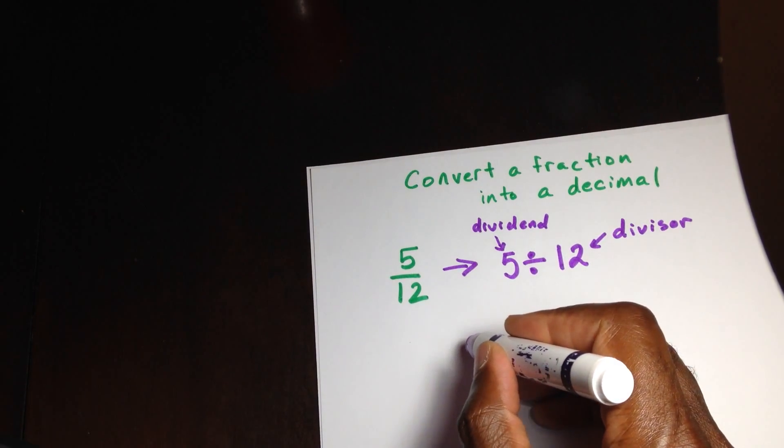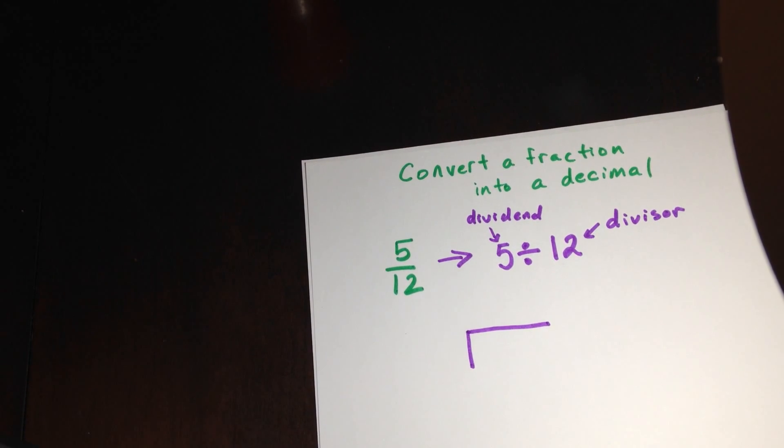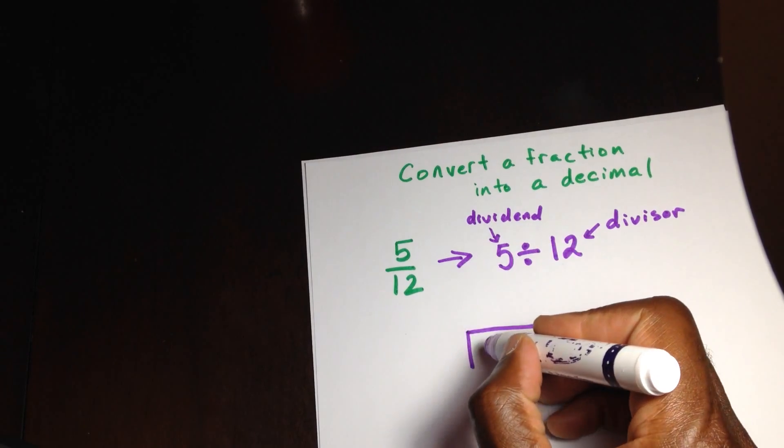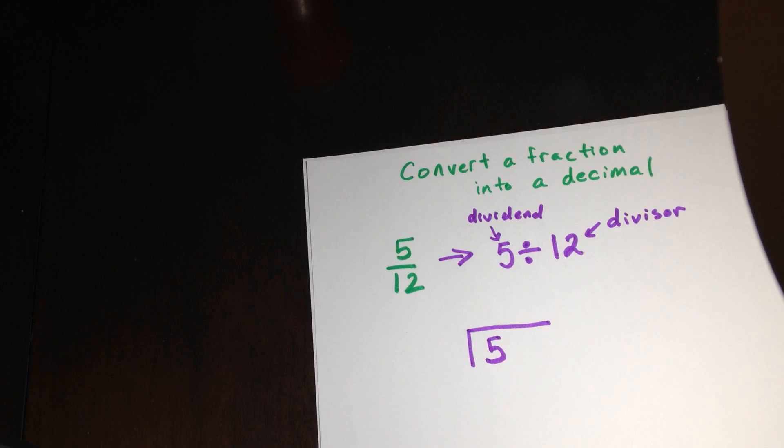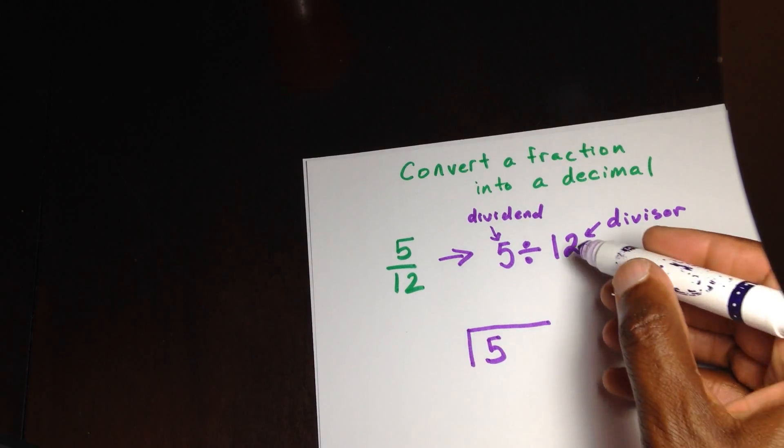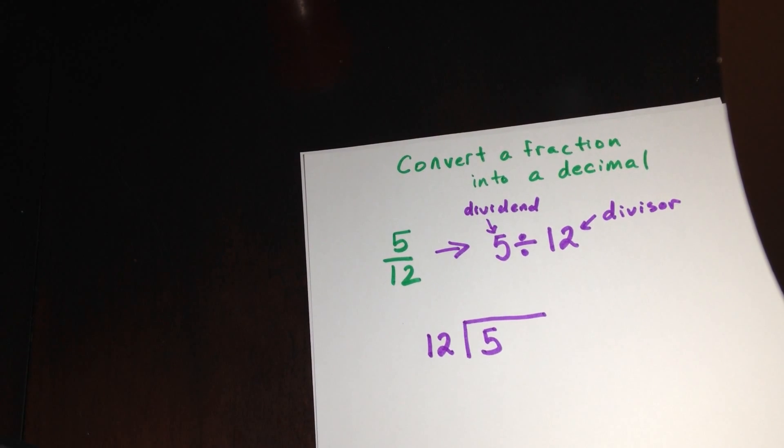Now that's the way it's written if we were writing it with this symbol here. However, when I write it with this symbol, we have to do a little bit of changing. The dividend, that number that's going to be divided will now be inside, I like to say inside the house. And then the 12, the divisor will be outside the house.